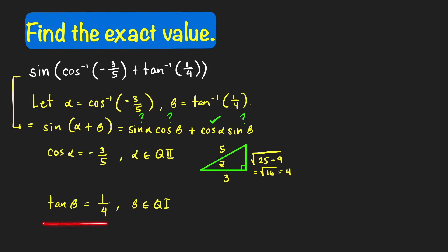We can also find the other trig function values of beta using a right triangle. Using the reference angle beta-bar, tangent of beta-bar equals tangent of beta, since tangent is already positive. Tangent = opposite over adjacent, so opposite is 1 and adjacent is 4. By the Pythagorean formula, the hypotenuse is √(16 + 1) = √17.